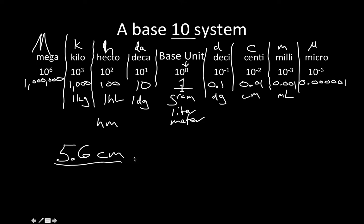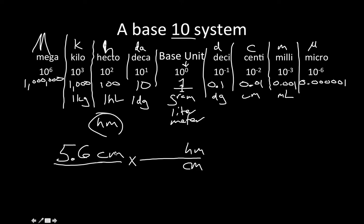We're going to use a multiplication fraction to solve this. We don't want centimeters in our answer, so we put centimeters on the bottom of our fraction. Our final answer wants to be hectometers, so we put hectometers on top. Check that your units cancel out: centimeters on top cancels with centimeters on the bottom, and the only unit left is hectometers — which is what we want.